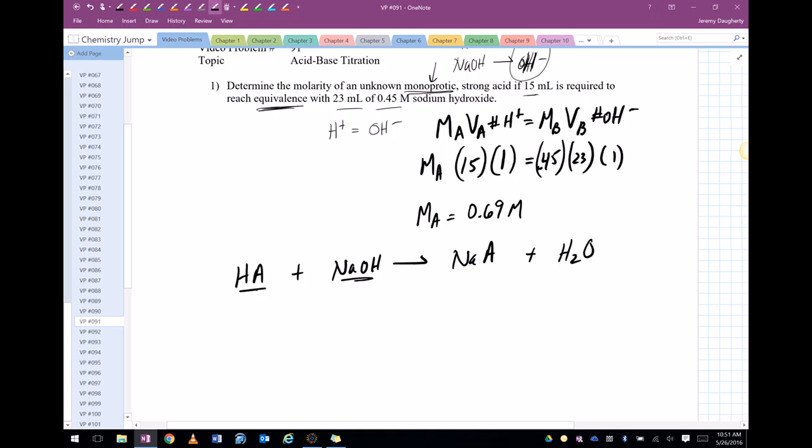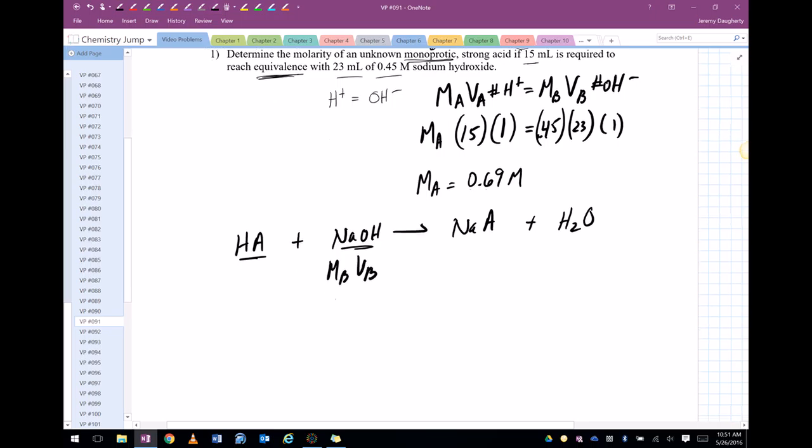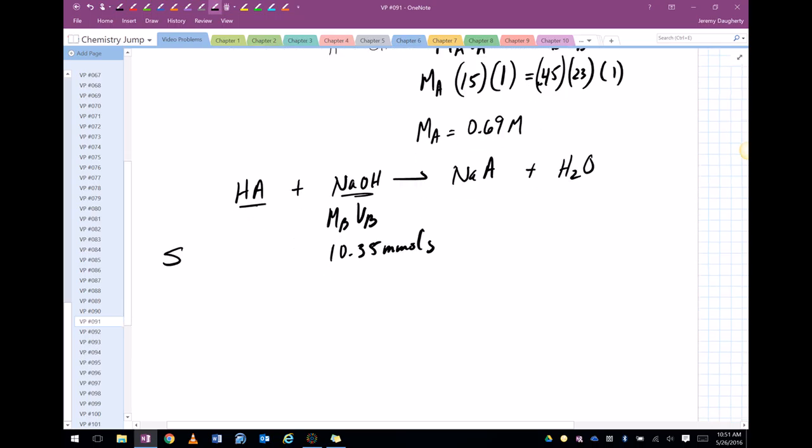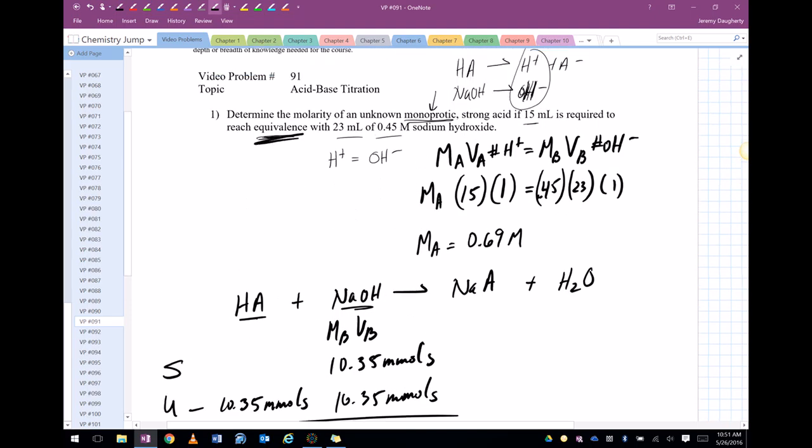So when I take that 23 times 0.45, which is the molarity of the base times the volume of the base, I get a value of 10.35 millimoles. Okay, so that's how much sodium hydroxide I'm starting out with. Now I use 10.35 millimoles because I use all of it. So I end up with, for both of these, since it's at equivalence,